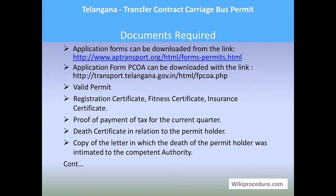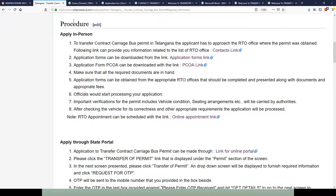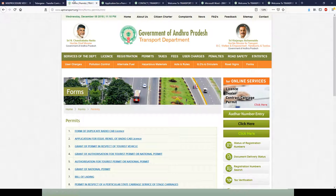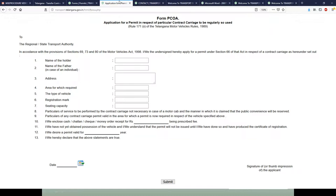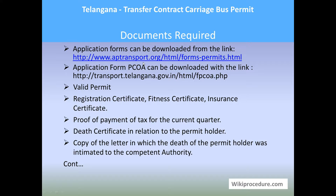Let us see the documents required for this procedure. The application form PZ0A can be downloaded from the link provided. I will show you how both these links can be accessed — by clicking that link you will come to the forms related to permits, which are directly useful for processing this procedure. Please download the form, take a print, and fill it to apply.